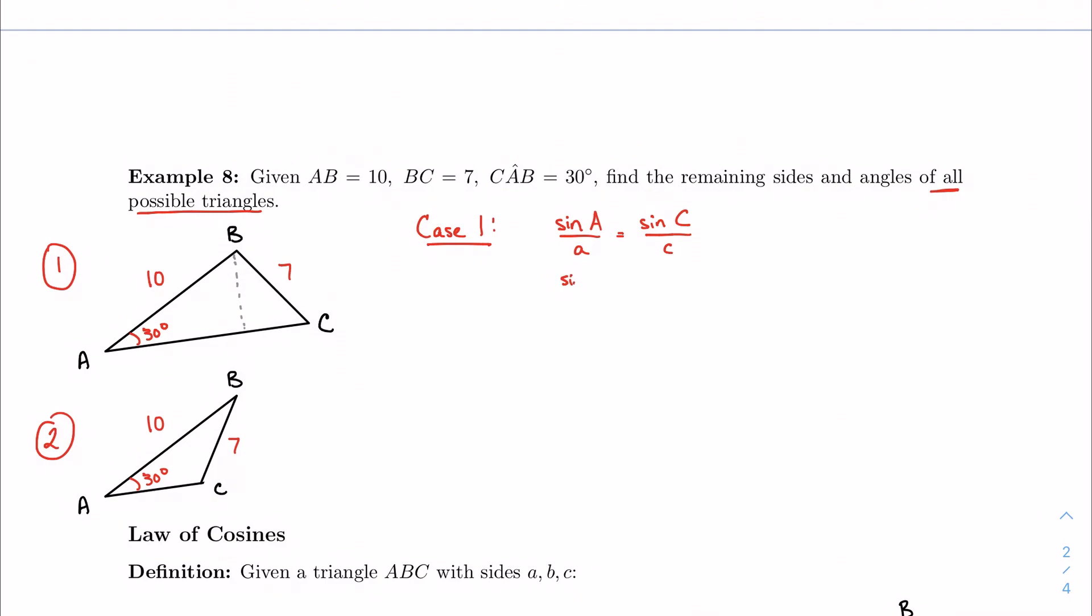I got sine 30 over 7 equals sine C. Oh, sorry. I want to find angle C over 10. I can do that. I get sine C is equal to 10 sine 30 over 7. And if I just use my calculator here, make sure you're in degree mode. So I'm going to do 10 sine of 30 divided by 7. So I have sine C is equal to 0.714.